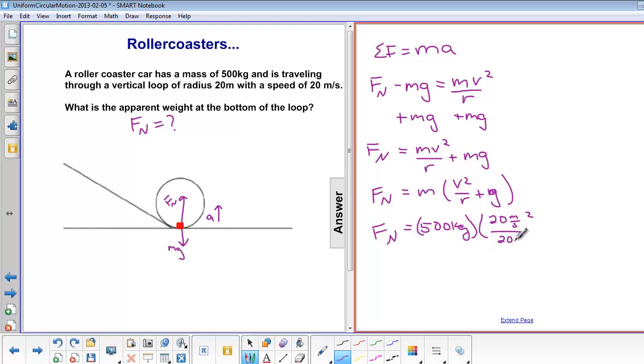Divided by r, which is 20 meters, plus g, which is 9.8 meters per second squared.